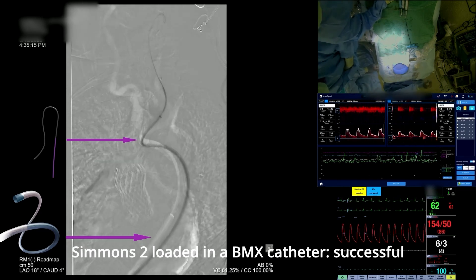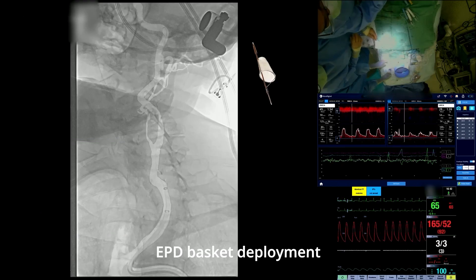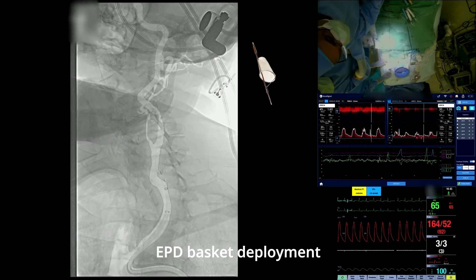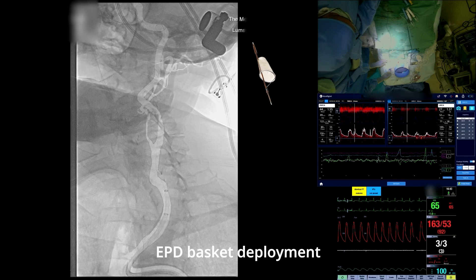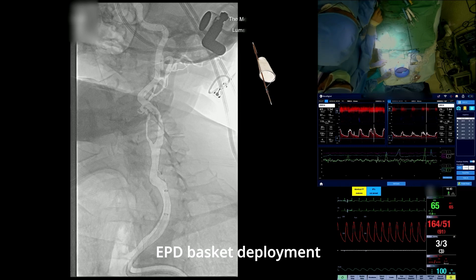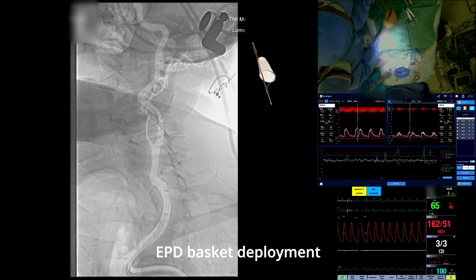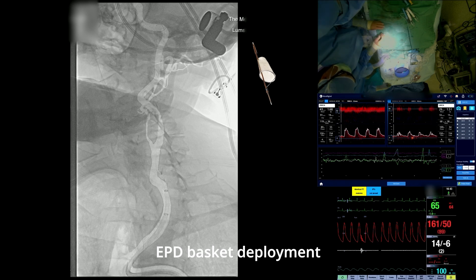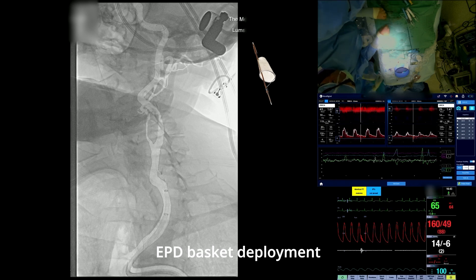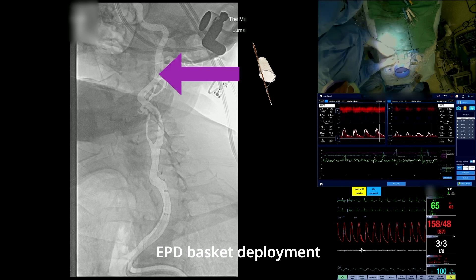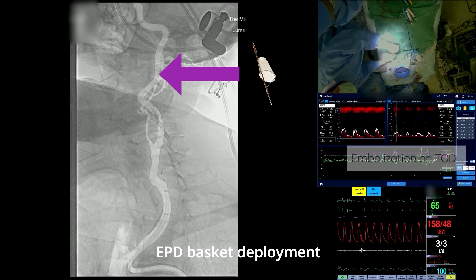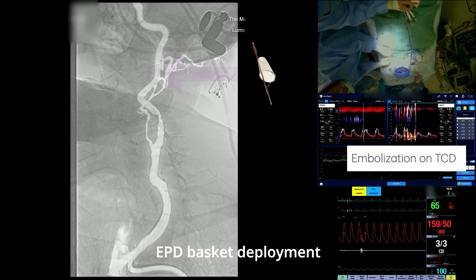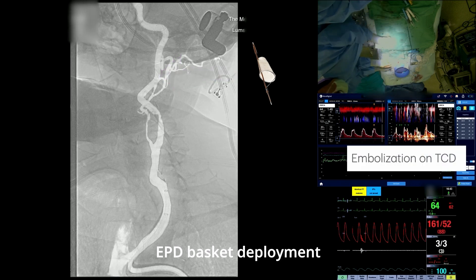The Simmons catheter was then removed, and a monorail system filter wire was advanced through the stenosis, resulting in embolization as seen as white hyperintensities on TCD. The filter was then deployed — the filter basket is visible as a ring on fluoroscopy — providing distal protection beyond the lesion.